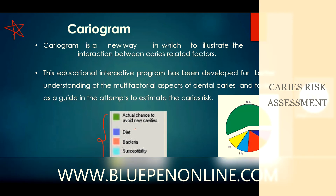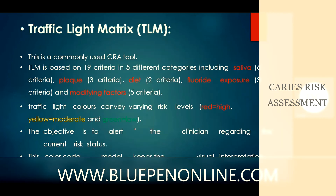Traffic light metrics is another caries risk assessment method. It is based on 19 criteria in 5 different categories, including saliva, plaque, diet, fluoride exposure, and modifying factors. The traffic light colors convey varying risk levels. The objective is to allow the clinician to assess the current risk status, and this color-coded model keeps visual interpretation simple and communicable to the patient as well.